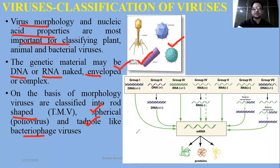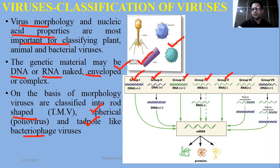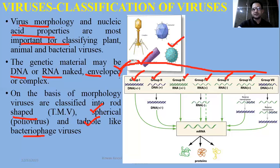Further details are also available in the classification. If you look at classification based on nucleic acid, there are approximately 7 groups: Group 1 is double-stranded DNA, Group 2 is single-stranded DNA, Group 3 is double-stranded RNA, Group 4 is coding-strand and non-coding-strand RNA, and Group 7 includes DNA plus and minus strands. These categories are not given in PTB.